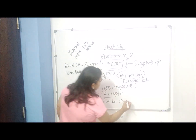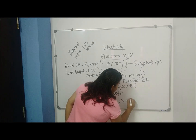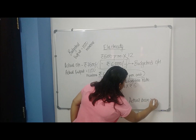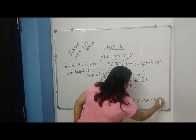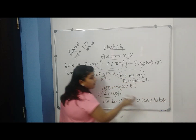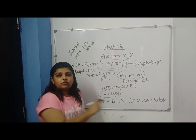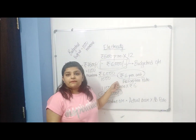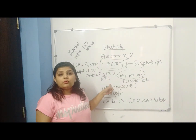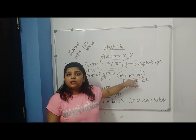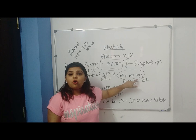Absorbed overheads means the actual base multiplied by the absorption rate. I wrote 'actual base' because here, for simplicity, we have divided by 1000 units. But sometimes the absorption rate is also on the basis of hours or on the basis of any other cost. So the actual base depends on what the absorption rate is based on.